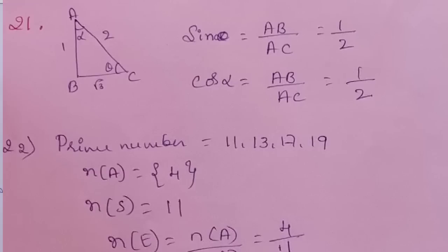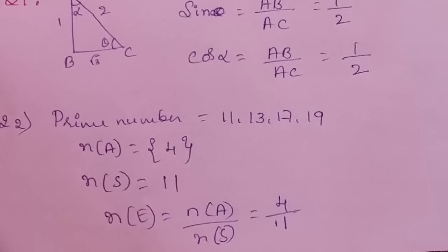Question 22: a box contains cards numbered from 9 to 19. If one card is drawn at random, find the probability that it bears a prime number. From 9 to 19, the prime numbers are 11, 13, 17, and 19 — that is 4 primes. N(S) = 11, so P(E) = 4/11.